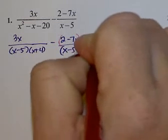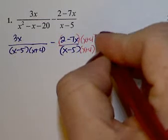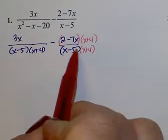Remember, whatever you attach to the bottom, you have to also attach to the top. So both sides contain x minus 5 and x plus 4.